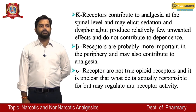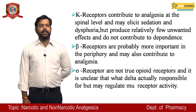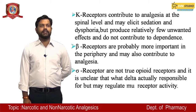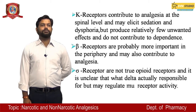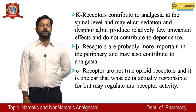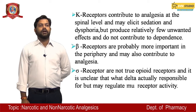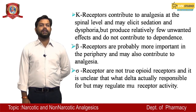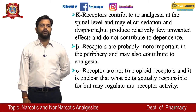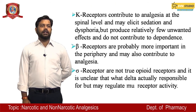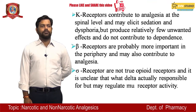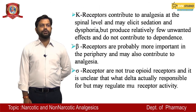Kappa (K) receptors contribute to analgesia at the spinal level. They may elicit sedation and dysphoria but produce relatively few unwanted effects and do not contribute to dependence. Beta receptors are probably more important in the periphery and may also contribute to analgesia.